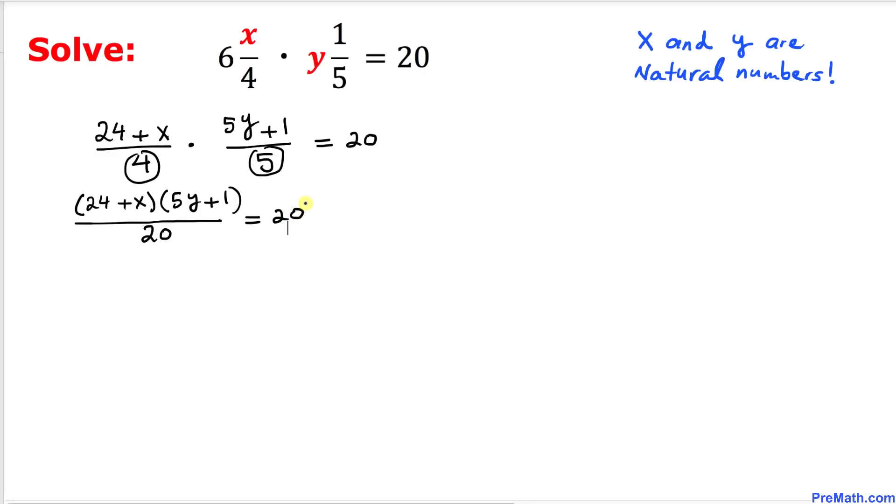Now let's go ahead and remove this fraction by multiplying 20 on both sides. So 20 and 20, this crosses out, so we ended up with 24 plus x, times 5y plus 1, equals to 20 times 20 is 400.